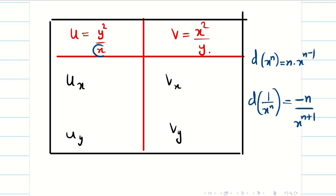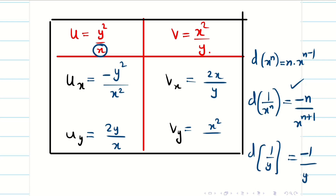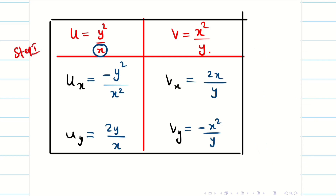Now let us find ux. Since x is in the denominator with power 1, differentiation of 1/x gives −1/x². So ux = −y²/x². For uy, 1/x is constant so we differentiate y², giving uy = 2y/x. For vx, 1/y is constant and differentiation of x² gives vx = 2x/y. For vy, x² is constant and differentiation of 1/y gives −1/y², so vy = −x²/y². The table is now complete.